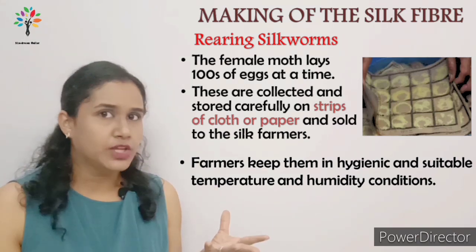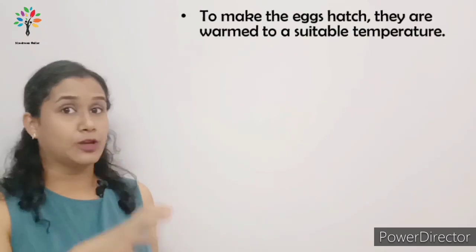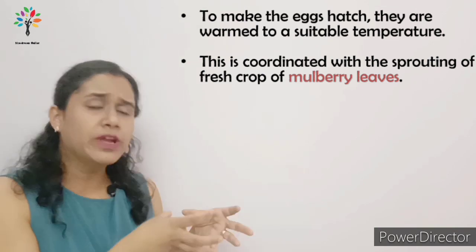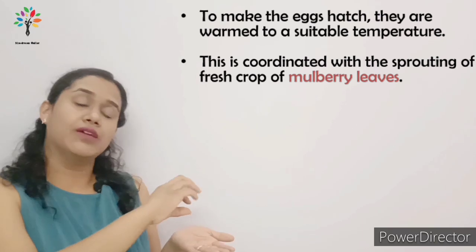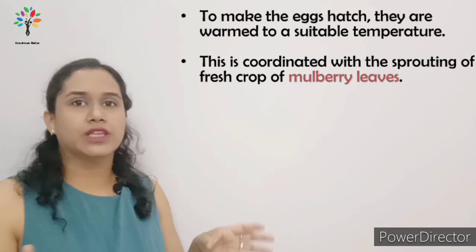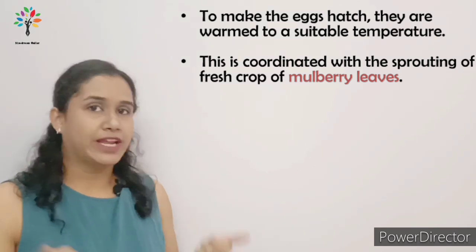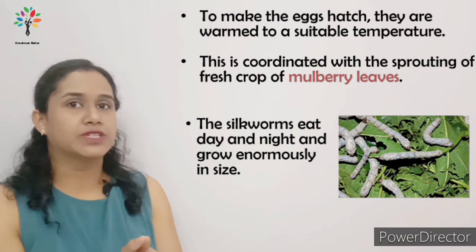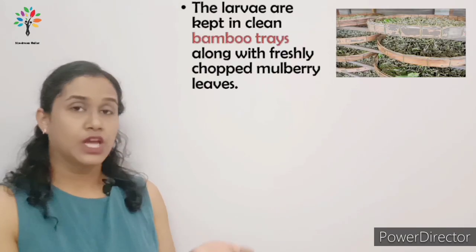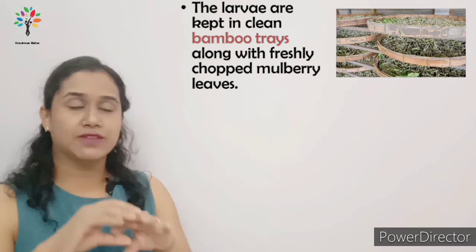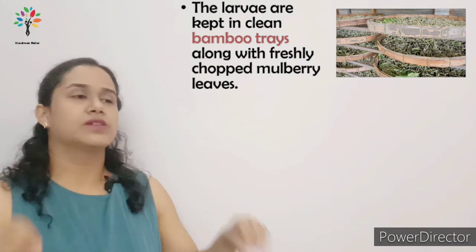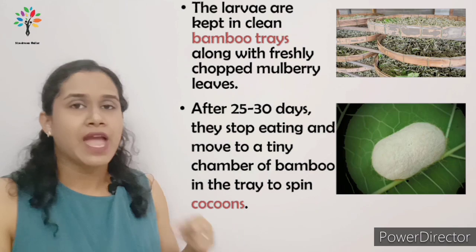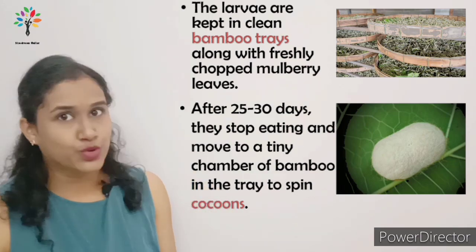When mulberry trees are producing leaves, the farmers want the eggs to hatch at that time, because the caterpillar's favorite food is fresh mulberry leaves. They coordinate this by providing a warm environment to the eggs so they hatch quickly. The farmers adjust temperature and humidity conditions to control when the eggs hatch. The caterpillars are kept in a bamboo tray with pieces of fresh mulberry leaves. They eat for 25 to 30 days, then move to the corners of the bamboo tray and spin the silk fiber to form the cocoon.